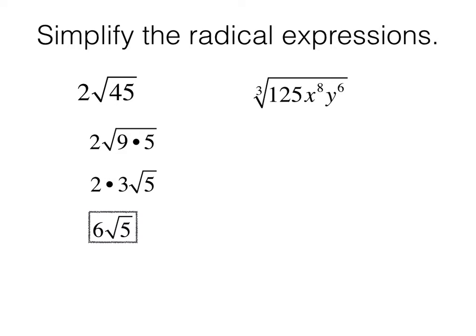In the next radical expression, we want to start thinking about perfect cubes. So 125 is already a perfect cube, but x to the 8th is not. x to the 6th times x squared would work because now x to the 6th is a perfect cube. Now we can take the cube root of 125, and that's 5. The cube root of x to the 6th is x squared. The cube root of y to the 6th is y squared. And what's left inside the radical, the cube root of x squared. So that is now in simplest form.